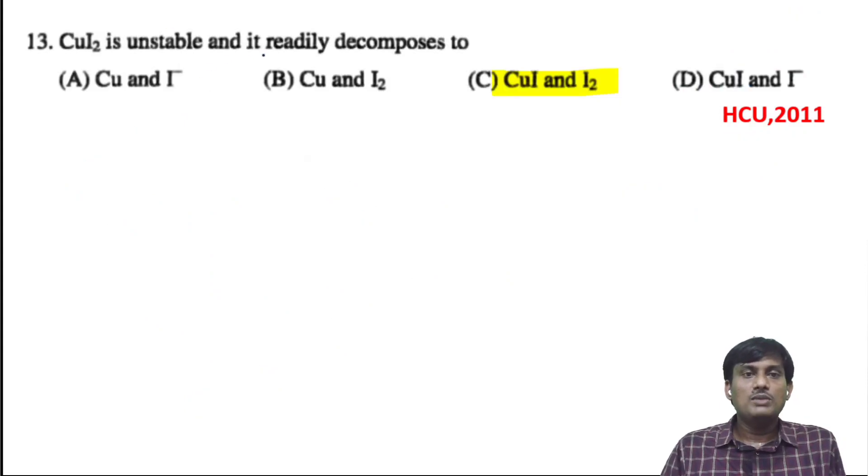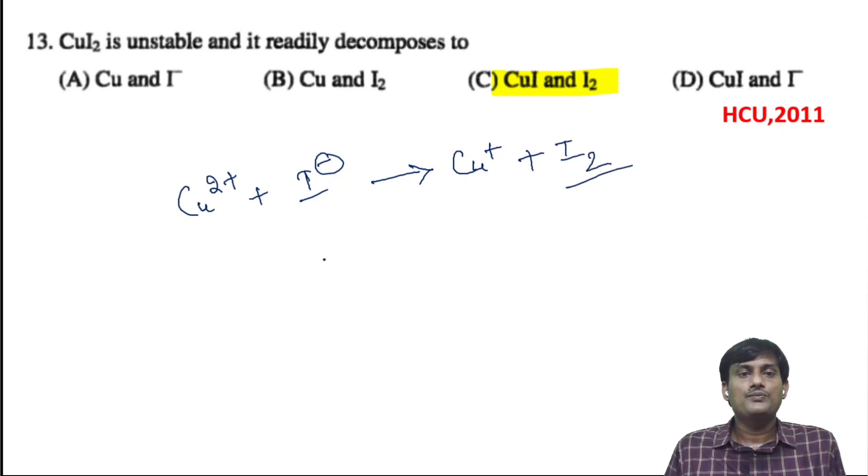CuI2 is unstable and it readily decomposes. If we take CuI2 as Cu^2+ and I^-, I^- is a better reducing agent which can reduce Cu^2+ into Cu^+ and I^- will be oxidized to I2. So the correct option is formation of cuprous iodide and iodine.